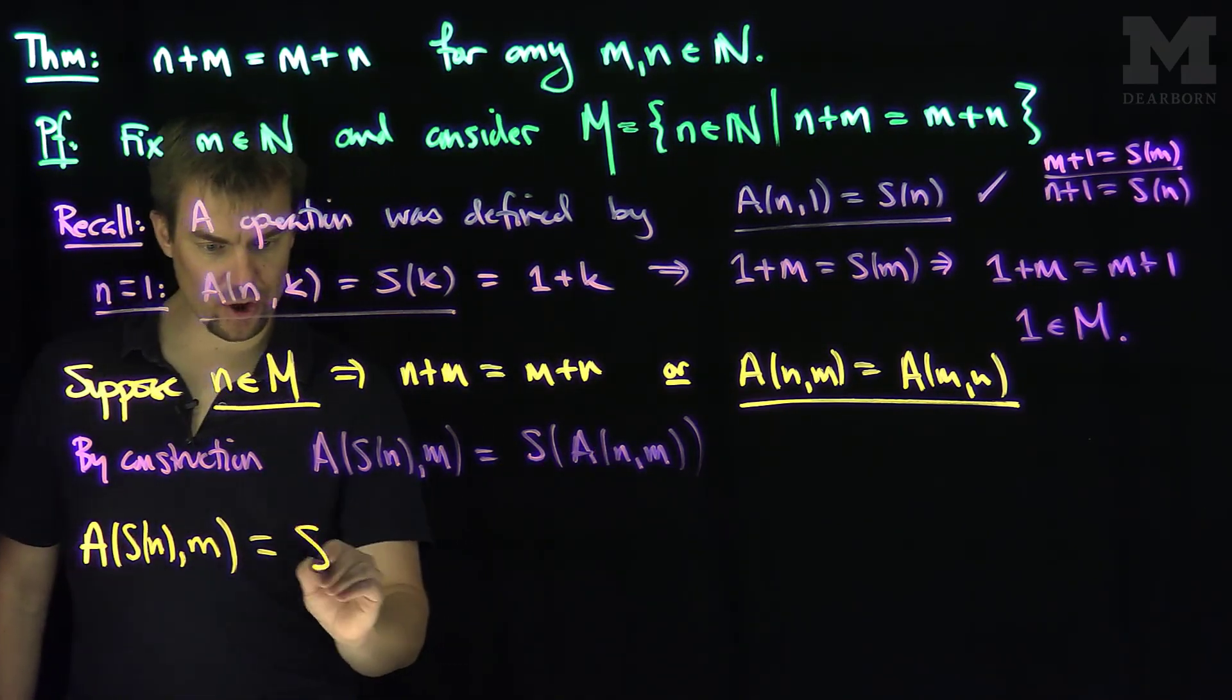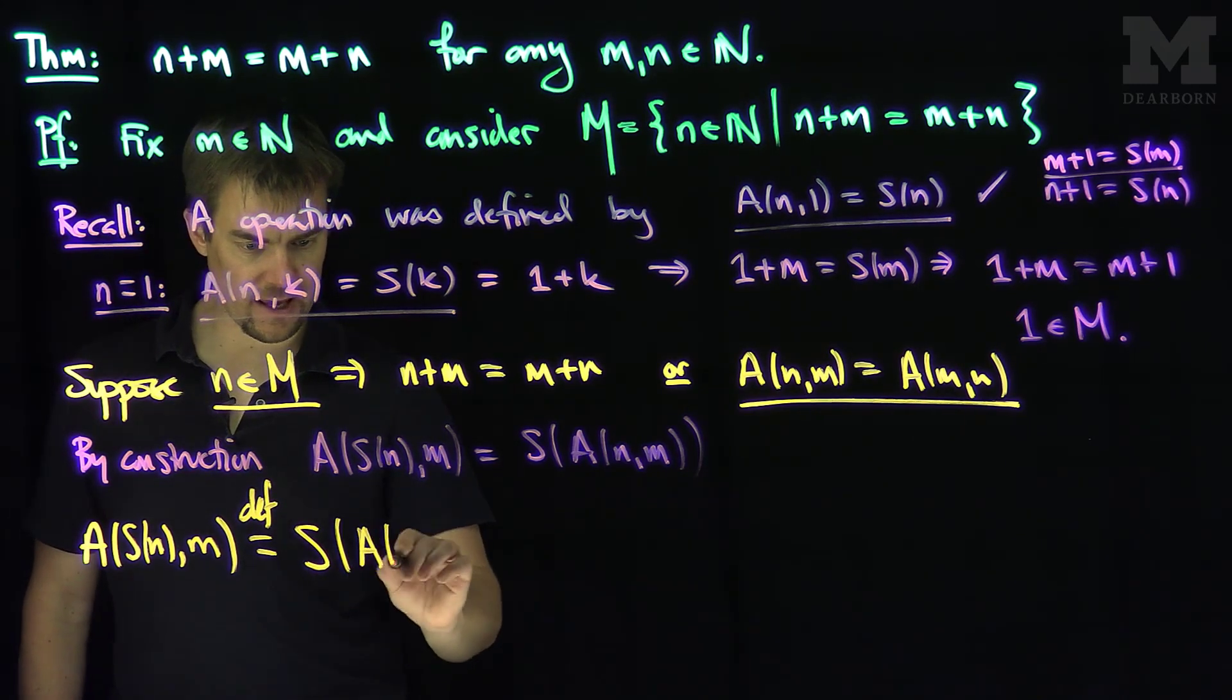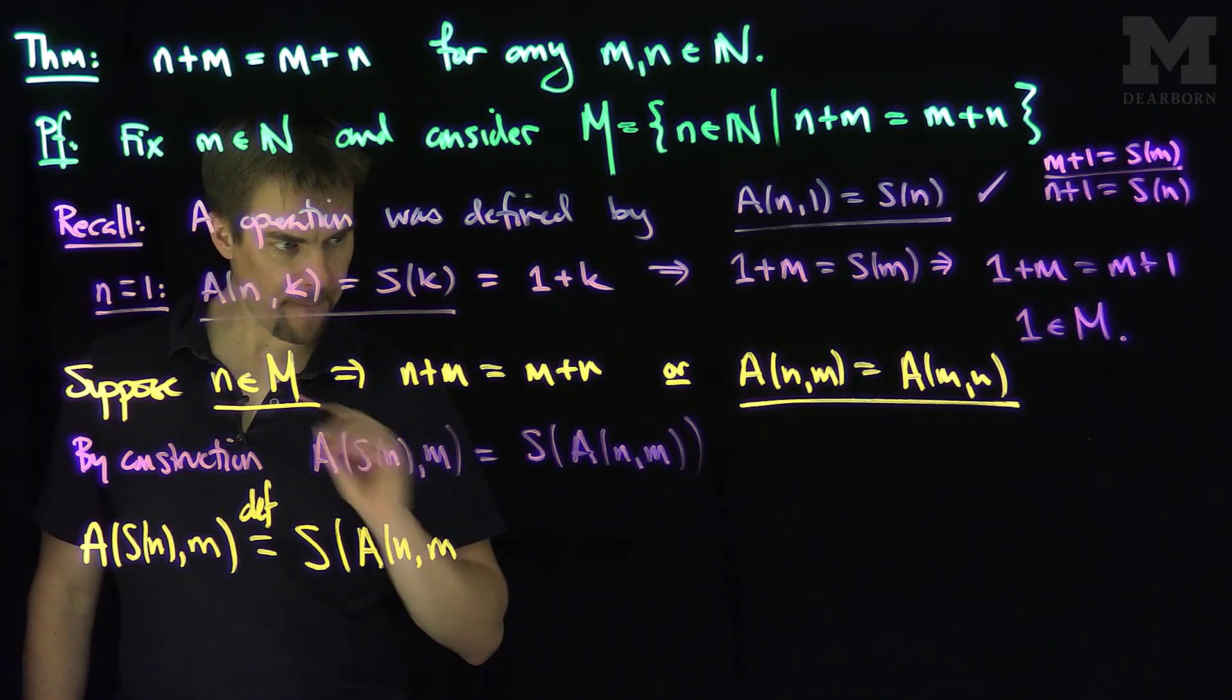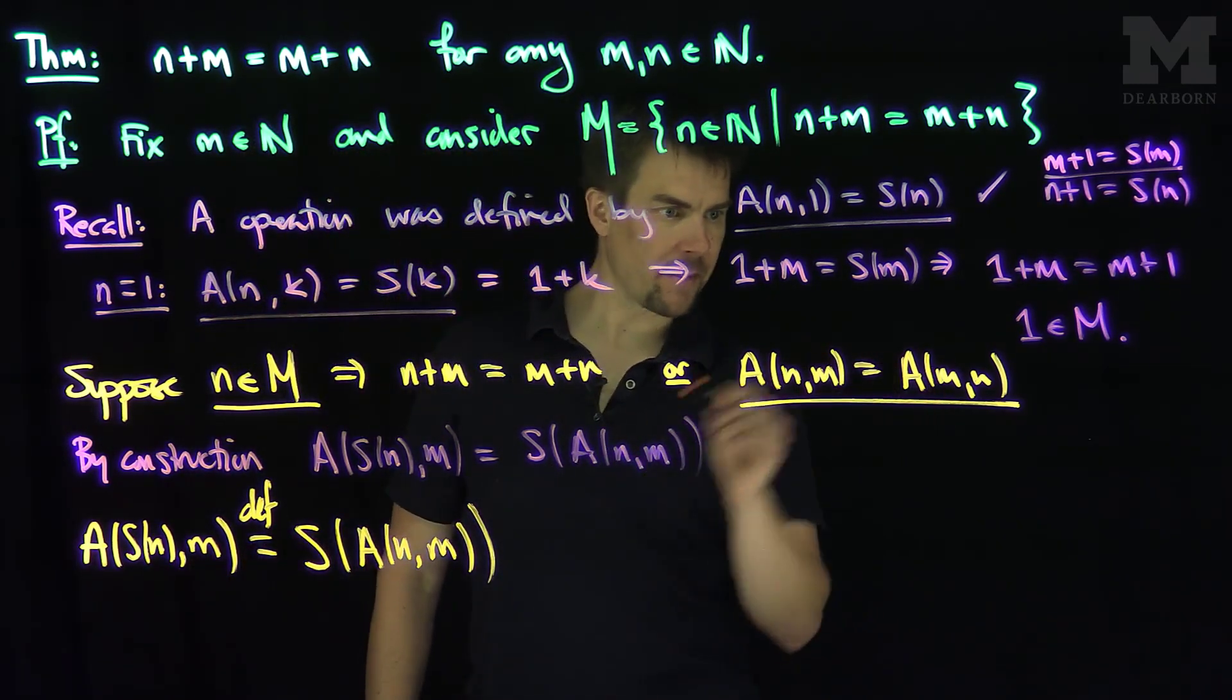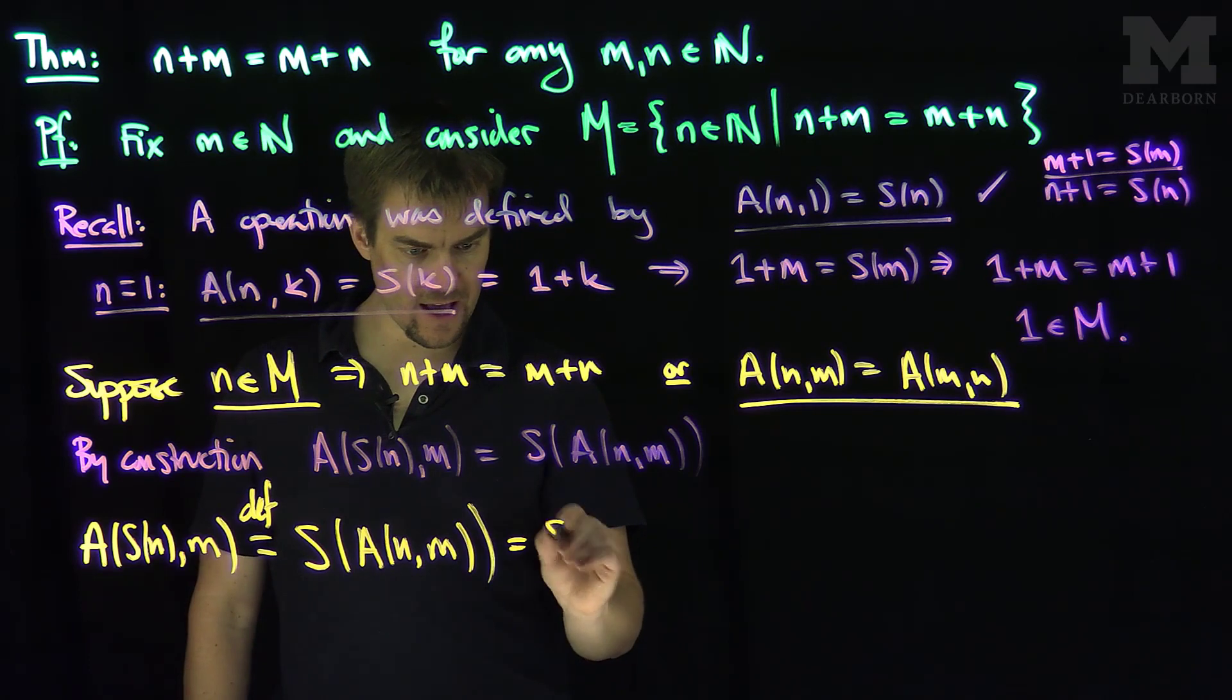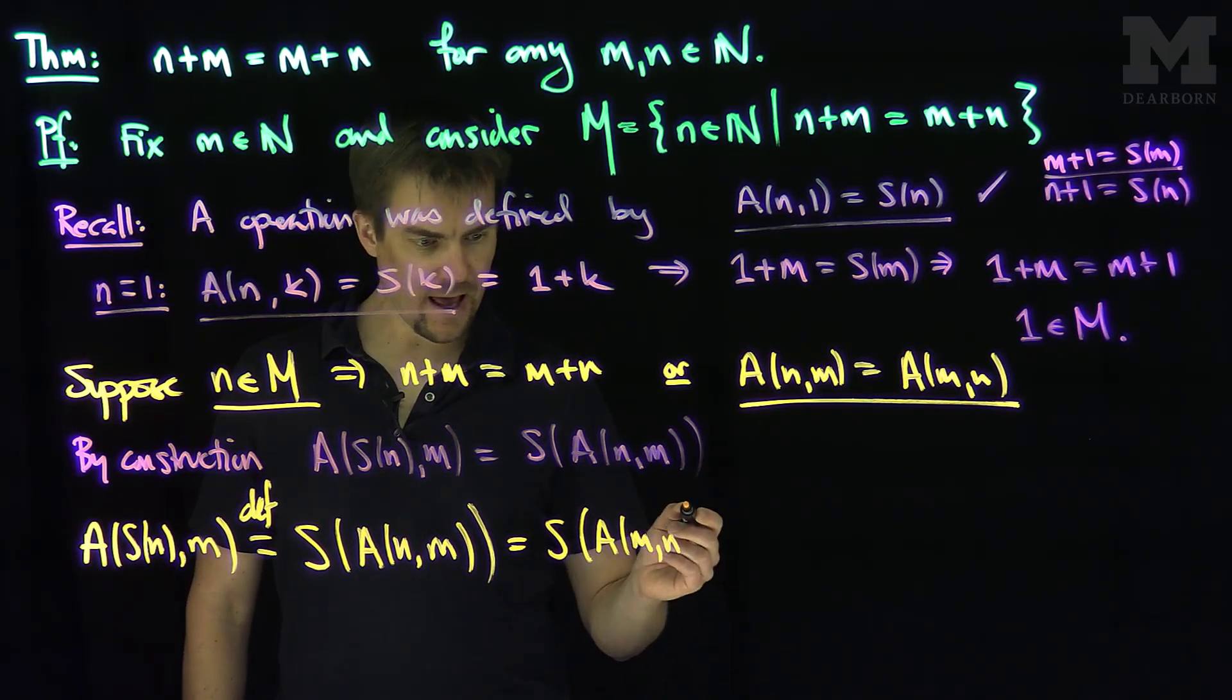By construction, by definition, this is S of A(n,m). But now, I know that A of n, m is A of m, n. So this is S of A of m and n.